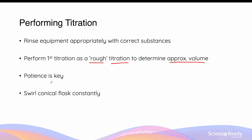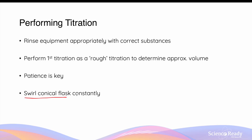After your rough titration, patience is very key as you want to slow down the rate of the titrant that's being added from the burette as you approach the end point of the indicator. When the titrant is being added, make sure you swirl the conical flask constantly to allow the end point to occur quickly.